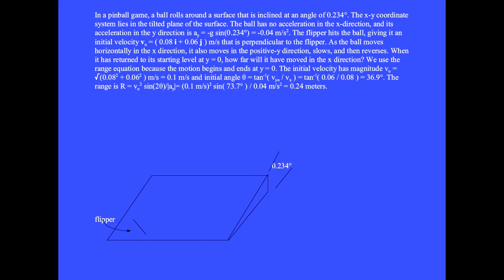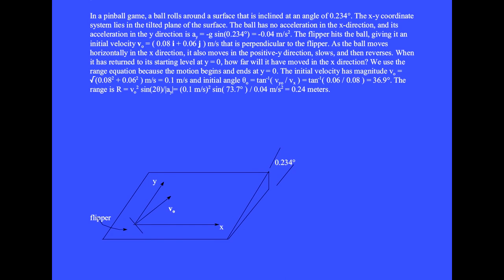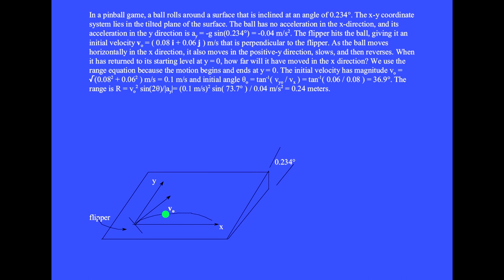In a pinball game, the ball rolls around a surface that is inclined at an angle of 0.234 degrees. The xy coordinate system lies in the tilted plane of the surface. The ball has no acceleration in the x direction and its acceleration in the y direction is a_y equals minus g sin(0.234°) equals minus 0.04 meters per second squared. The flipper hits the ball giving it an initial velocity vector v₀ equals 0.08 i hat plus 0.06 j hat meters per second. As the ball moves horizontally in the x direction with constant v_x, it also moves in the positive y direction, slows, and then reverses.